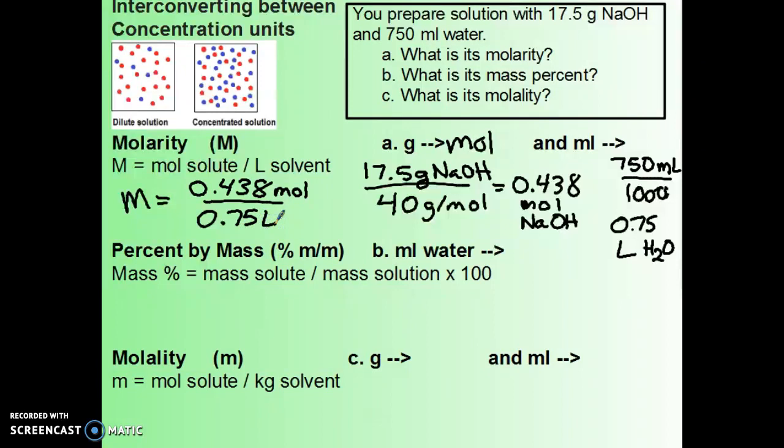Molarity is equal to 0.438 moles in our 0.75 liters. So that should easily calculate out to a nice concentration. We've got 0.583, and since my smallest amount of significant figures comes from my volume, I'm going to keep it at 0.58 molar. So this is the concentration in terms of molarity.